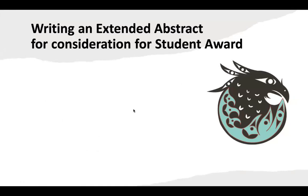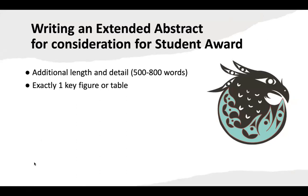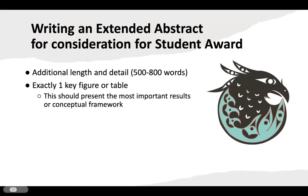Thank you — I love that. I want to briefly talk about what to do when you write an extended abstract for consideration for a student award. You're given additional length — 500 to 800 words — and exactly one key figure or table. The number of figures or tables is not less than one, not more than one — just one, either or. I really recommend figures. This should present the most important results or the conceptual framework — something really big and compelling.